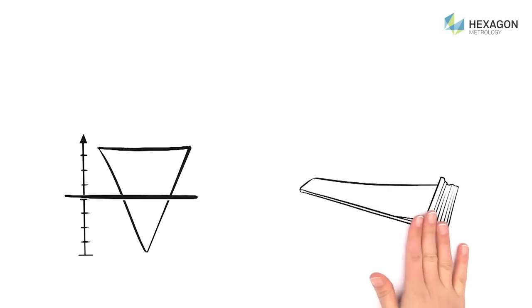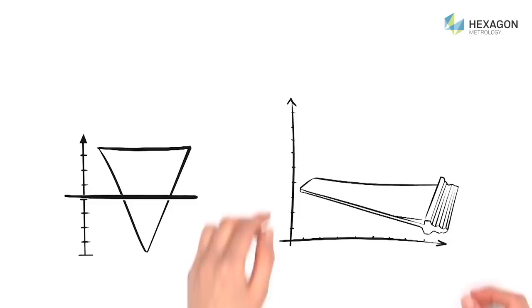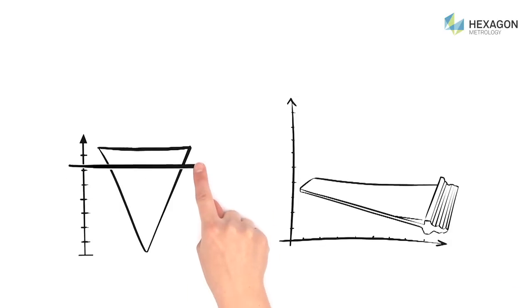And, Peter can even determine the level of detail of the scan himself. By changing just one setting, he can decide to collect more or less data from the part, depending on its size or complexity. More 3D information is better for complex parts, right?